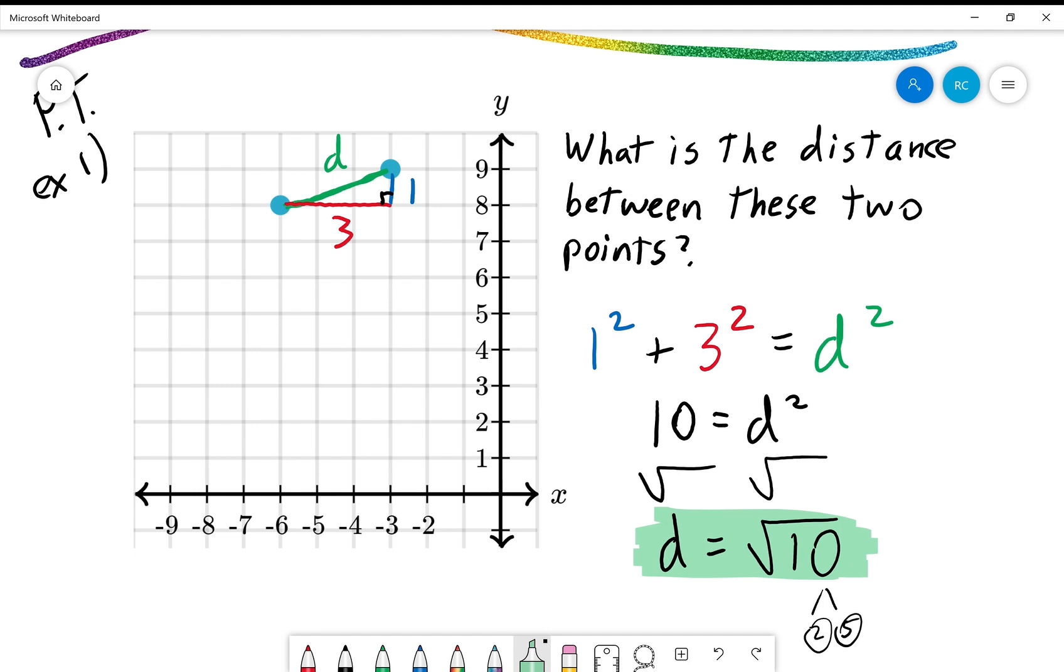Now, just because I know some of you are itching to grab that calculator, I will go ahead and give you a decimal approximation using my calculator. Let's see. The square root of 10 is about 3.16. But I really want you to be able to work with those square roots.